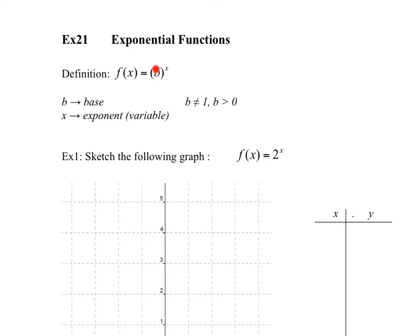B cannot equal 1 for these functions, because if b equals 1, then 1 to the power of something is just 1, so that would be a constant function. B is also defined as a positive value, because if it's negative, you get a pretty funky graph.